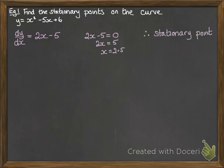So the stationary point is at 2.5 and then we substitute it back into the equation for y to work out the y coordinate.